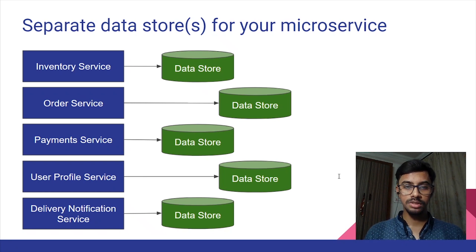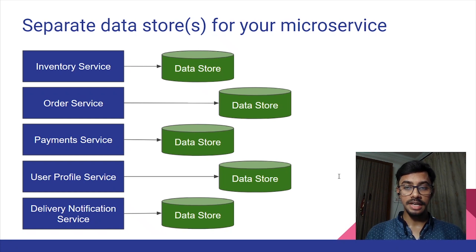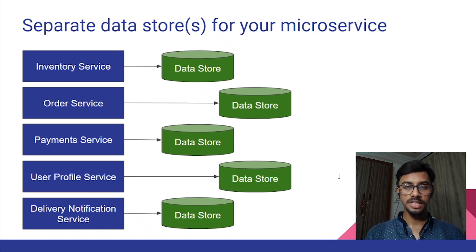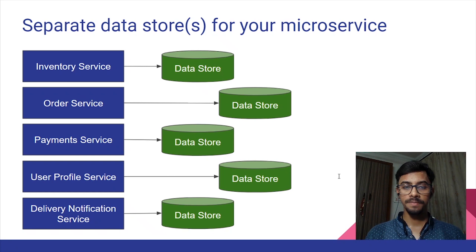Our next best practice is separate data stores for each microservice. It defeats the purpose of having microservices if you have a monolithic database that all your microservices share. Any change or downtime to that database would then impact all the microservices that use it. Therefore, you must choose the right database for your microservices needs, customize the infrastructure and storage to the data it maintains, and let it be exclusive to your microservice. Ideally, any other microservice that needs access to that data would only access it through the APIs that the microservice has exposed.